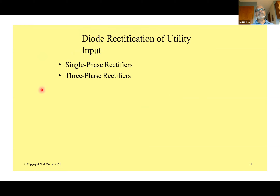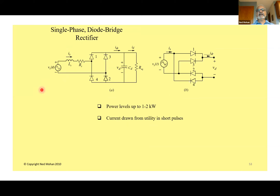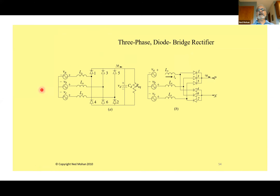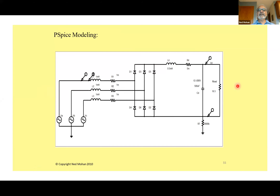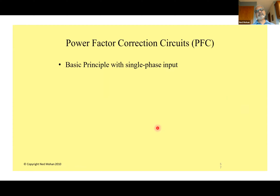Single-phase and three-phase rectifiers are covered. For three-phase rectifiers, the top three diodes form the top group and the bottom three form the bottom group, making analysis easier. We model them in PSpice and get simulation results showing the per-phase current waveform, which has harmonic components that can be analyzed.